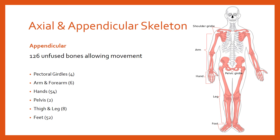Like an appendix added onto the end of a book, the appendicular skeleton is the set of bones added onto the axial skeleton so that you can move around. The axial skeleton doesn't have much movement; the appendicular skeleton is what allows locomotion. For movement to occur, these bones need to be unfused so that muscles can pull on them to create movement.